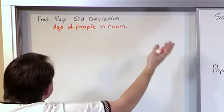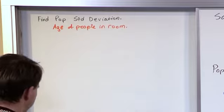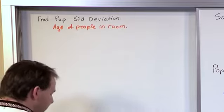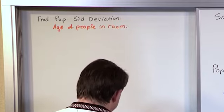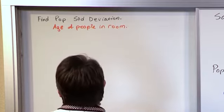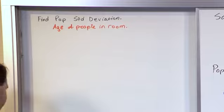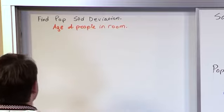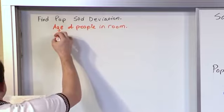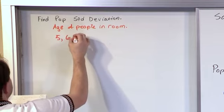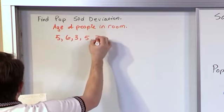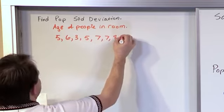And in this case, let's just pretend that the population is everybody in this room. I mean, I know that's not practical. That's not typically what you're doing in real life. But let's just pretend that the ages of these people are actually the entire population of everybody we care about. And so, that would be 5, 6, 3, 5, 7, 7, 8, and 25.